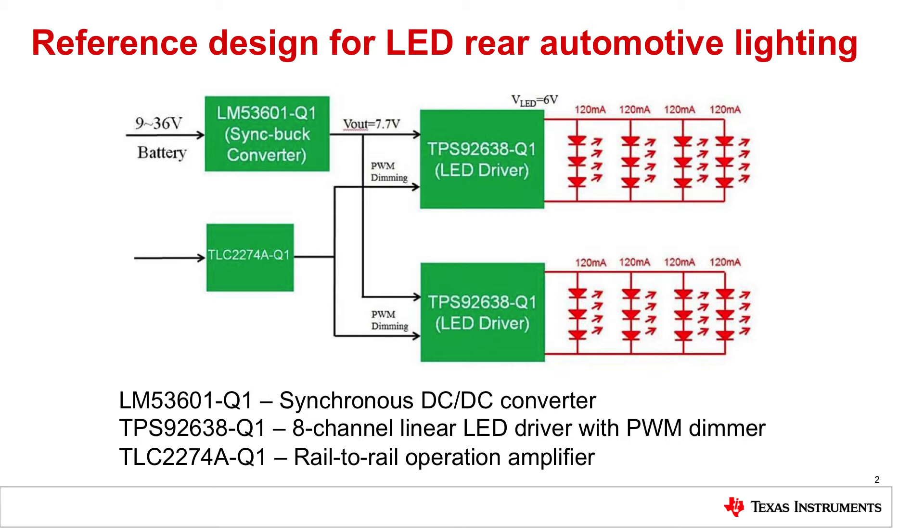Traditional designs would connect the dimmer directly to the battery. In this case we've used a DC-DC converter because this can help with issues associated with thermals, solution size, and in some cases reliability.